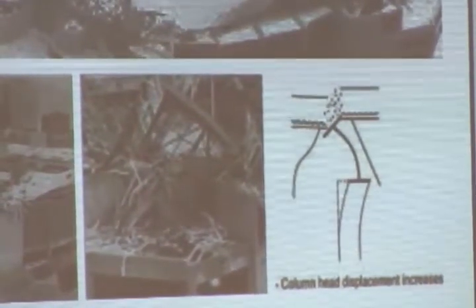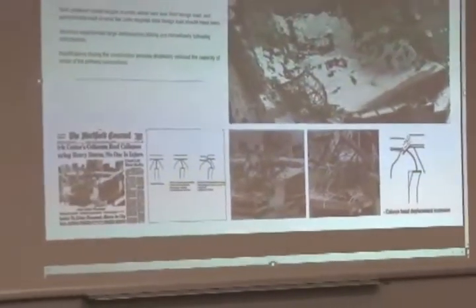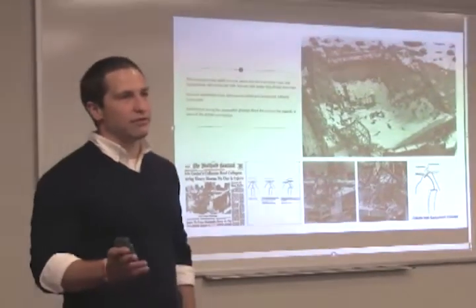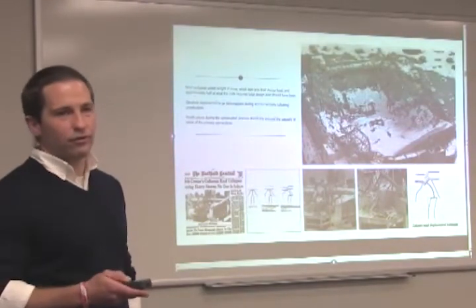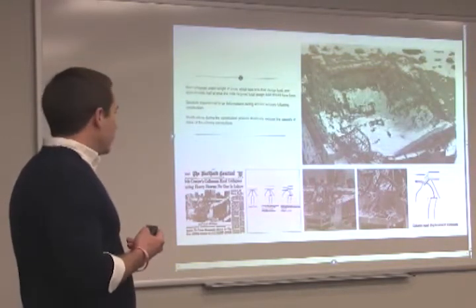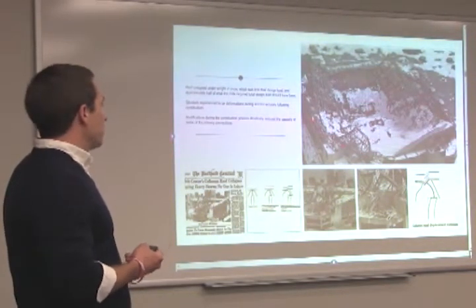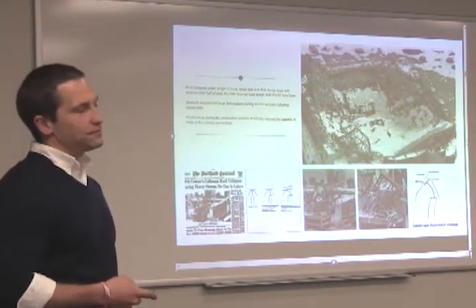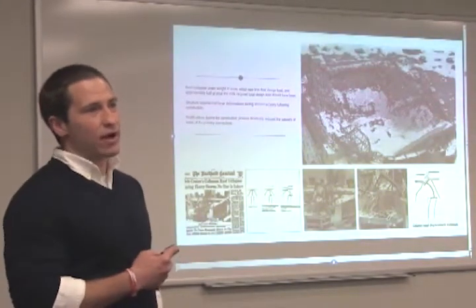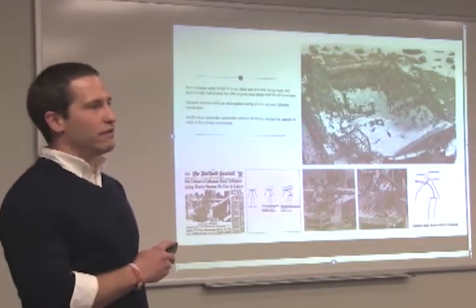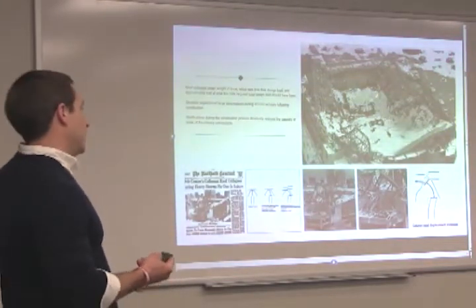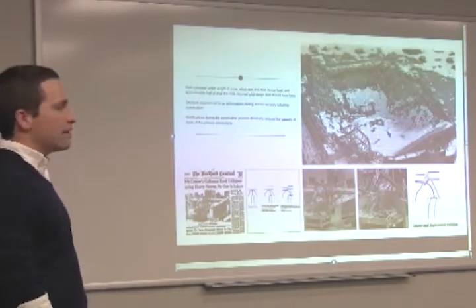The connections didn't get properly reviewed by the inspectors or the structural engineer of record. In both of these cases, the structural engineer of record wasn't properly retained through the construction administration process — not afforded the ability to really look through and make sure their design was being carried out in the field. During construction, there were very large deformations in the roof: 12, 14, 18 inches of sag in those roof members as they went up. Without proper review of this process, the contractor kept moving through and built it. Unfortunately, it came down — but luckily, not a major loss of life.